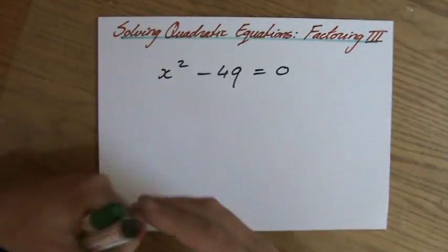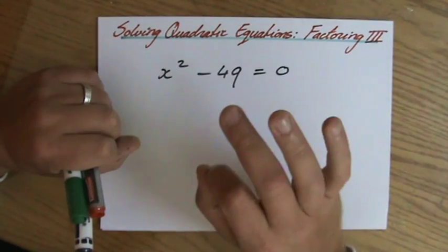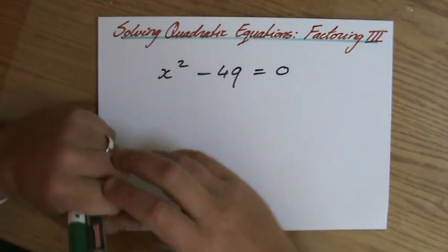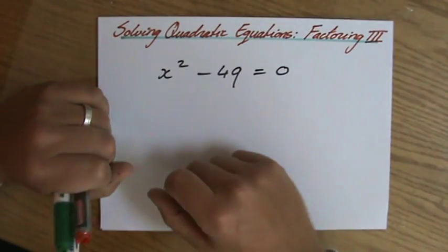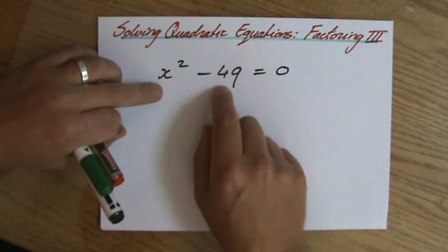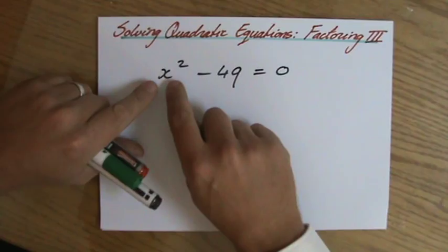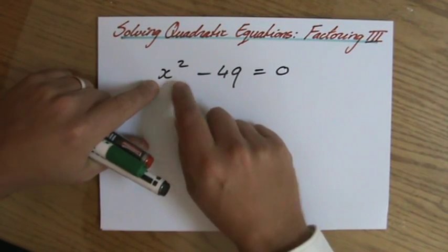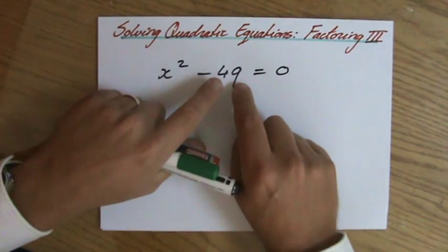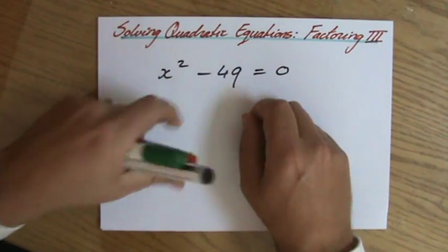Of course, you know what factoring is by now. You've hopefully seen my videos about that as well. You realize, oh hang on a minute, this is what we call the difference of two squares. I have a square, x squared, difference, minus, and again a square number, 49 being 7 squared.